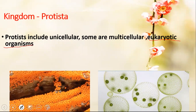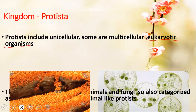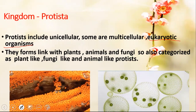One major characteristic is that they are eukaryotic organisms, meaning they have a true nucleus. Earlier, in Kingdom Monera, organisms were prokaryotic. Protista forms the connecting link between plants, animals, and fungi, and they are categorized as plant-like, fungi-like, and animal-like protists. They are the connecting link between the simpler Kingdom Monera and complex kingdoms like Plantae, Animalia, and Fungi.